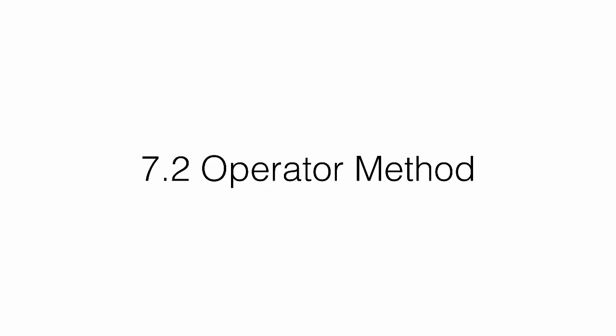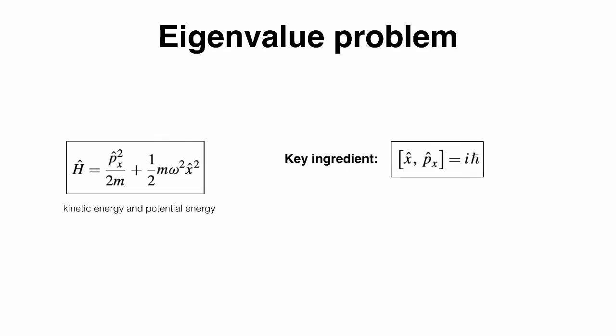We will solve this problem quantum mechanically in one dimension using operators, since it is much easier than working with wave functions for this problem. The Hamiltonian is the sum of kinetic and potential energy, with both x and px as operators. The key difficulty is that x and px do not commute, so eigenstates of px are not eigenstates of x, and neither are eigenstates of H.